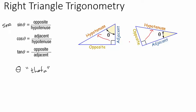Which side is opposite or adjacent is totally dependent upon where the angle theta is located. In the other picture, theta is located in a different spot, so the opposite side changes accordingly. That leaves the adjacent side. There are three variables in every formula — the angle and two sides — and you need to know at least two of the three to find the other.